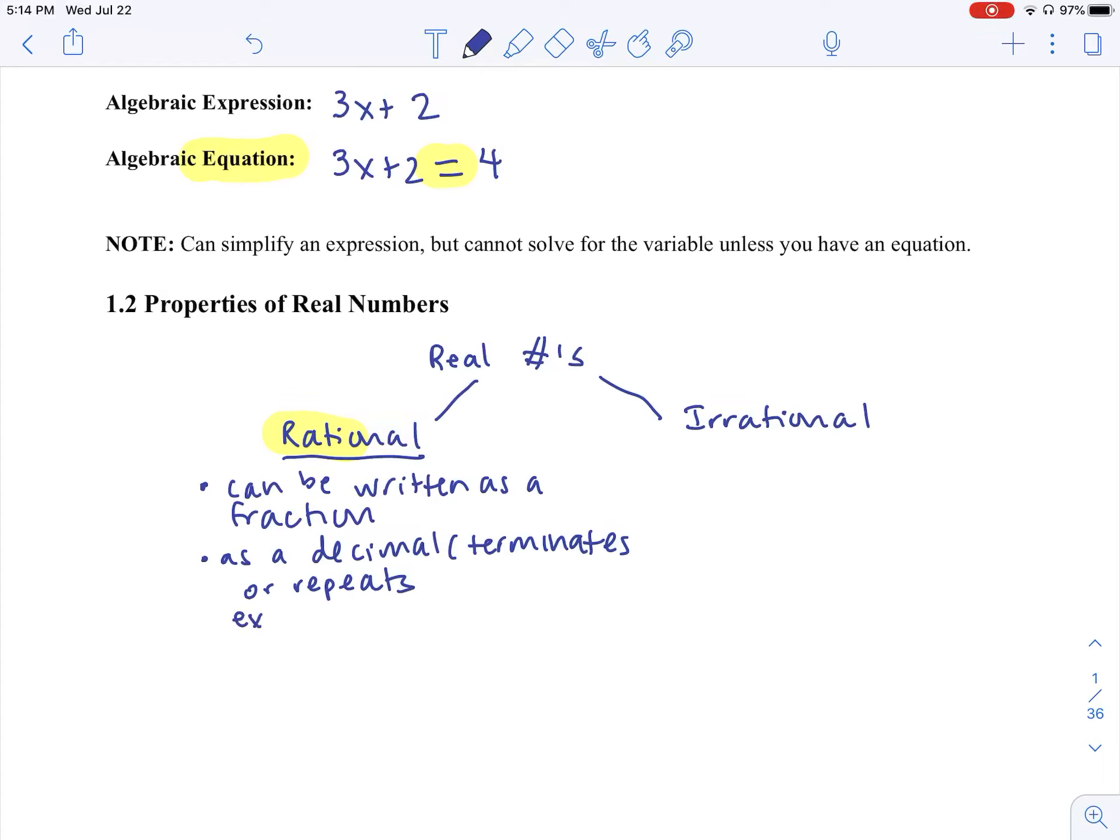So an example of this would be, why would a repeating decimal be rational? One-third is 0.3333 repeated, but we can write that as a fraction of one-third. So anything that could be written as a fraction is rational.